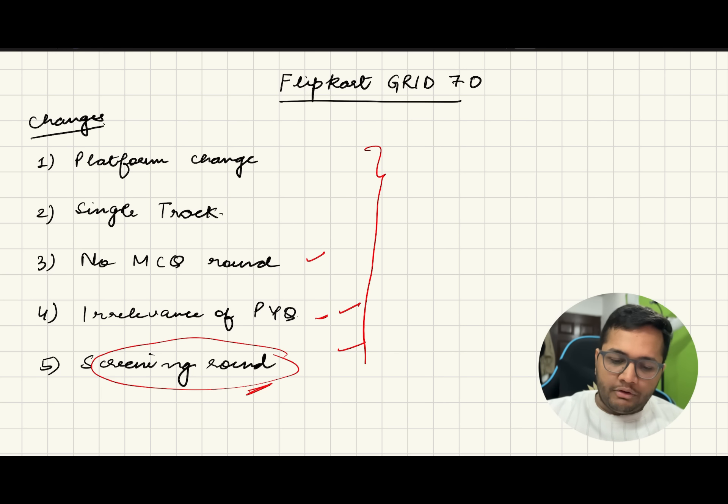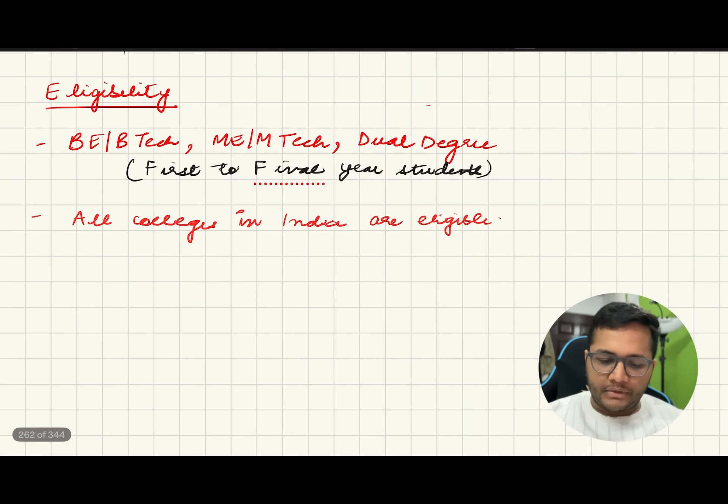Next, eligibility. Who is eligible? B.Tech, M.Tech, as I've already told, first year to final year students with dual degree are eligible. Anyone and everyone, 2026, 27, 28, 29, even 2030 pass-outs if you are a five year degree.